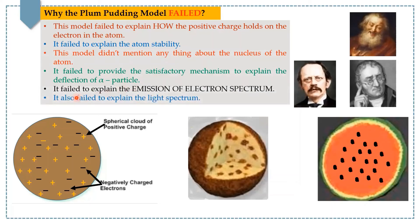It failed to explain the emission of electron spectrum consisting of different frequencies from the atom, and it also failed to explain the light spectrum. For example, according to Thomson's model, the hydrogen atom can emit single frequency light, but it was later observed that hydrogen atom emits light spectrum having different frequencies.